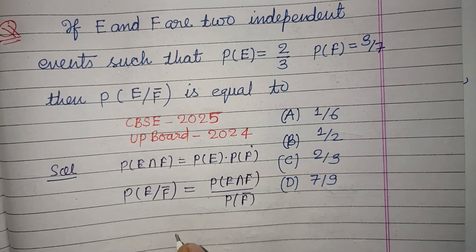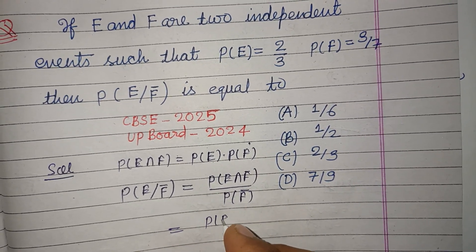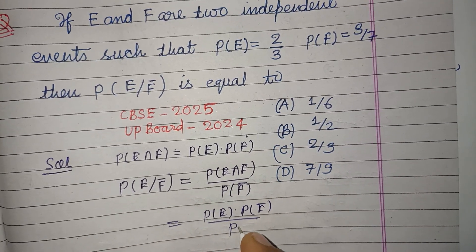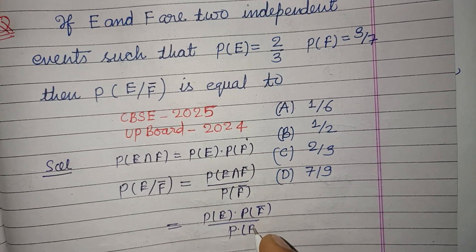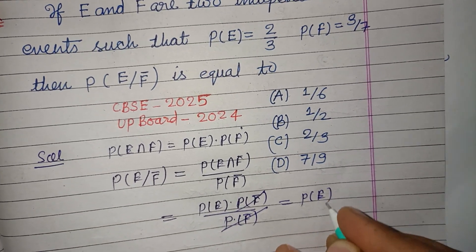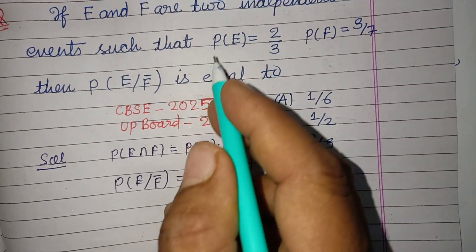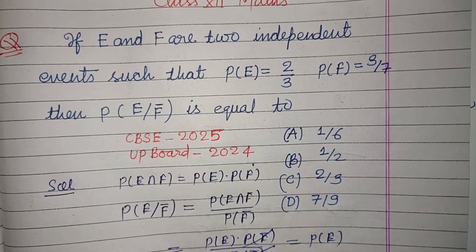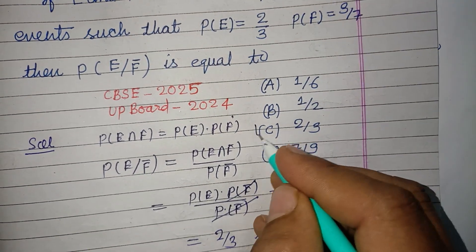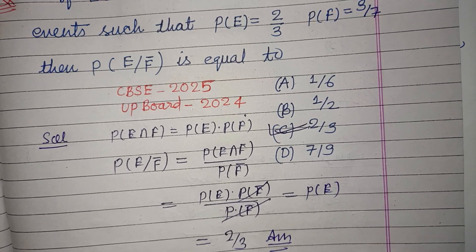This becomes P(E)·P(F̄) / P(F̄). The P(F̄) cancels, and we get P(E). P(E) is given as 2/3, so 2/3 is the answer. This corresponds to option C, therefore option C is correct.